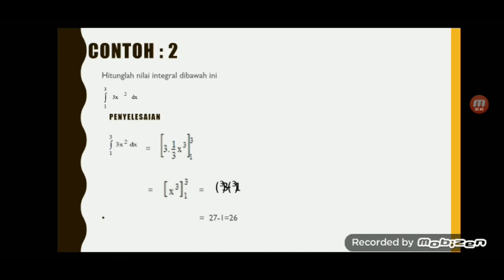Untuk contoh yang kedua, hitunglah nilai integral dari 3x² dx dengan batas bawah 1 dan batas atasnya 3. Caranya sama, tentukan nilai integral dari 3x² dx dulu, berarti 3 kali 1 per 3 x pangkat 3, dengan batas bawah 1 dan batas atasnya 3. Setelah itu, 3 kali 1 per 3 bisa disederhanakan menjadi 1.